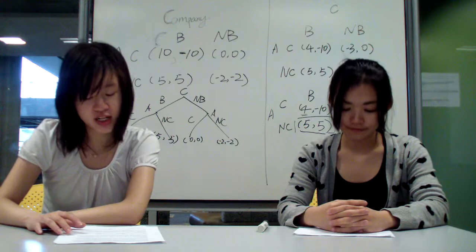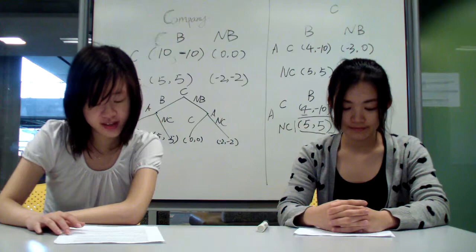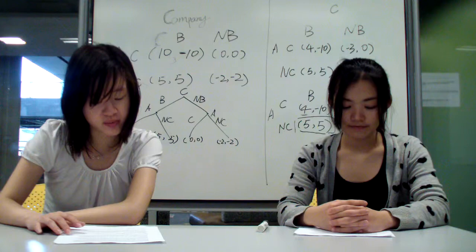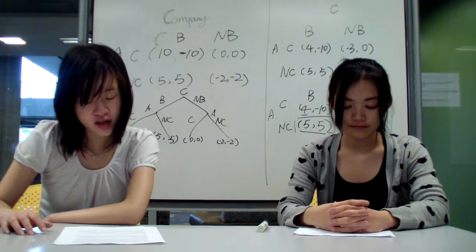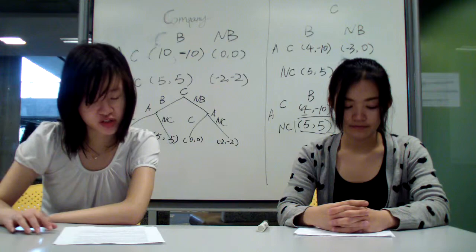If the efficiency of the test is not enough and the punishment is not severe enough, while the payoff of cheating is high enough, they would choose to cheat.